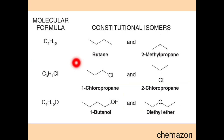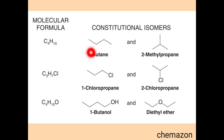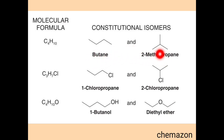Here are some examples of constitutional isomers. The first example is butane and 2-methylpropane. The number of carbon atoms is the same, and the number of hydrogen atoms is also the same in these molecules, but the bond connectivity is different. So these are called structural isomers, as you can see the carbon chain arrangement is different.